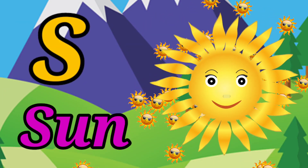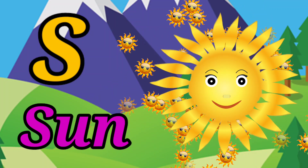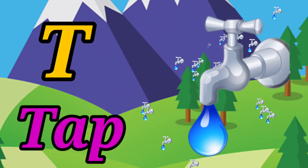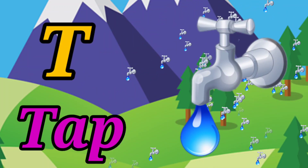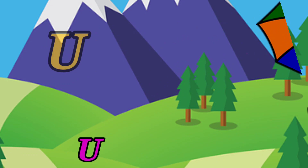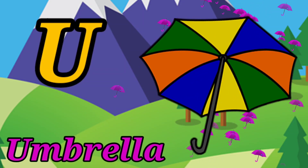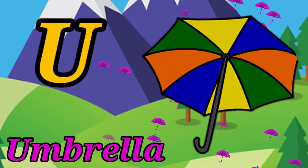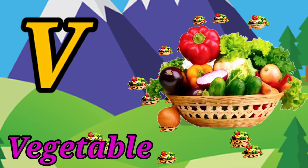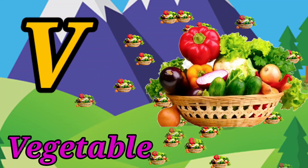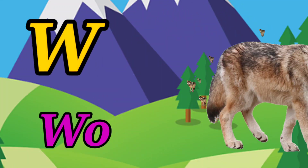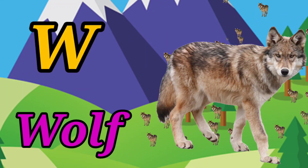S for sun, T for tap, U for umbrella, V for vegetable, W for wolf.